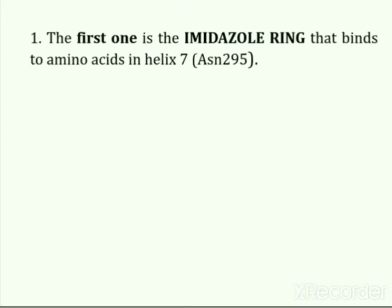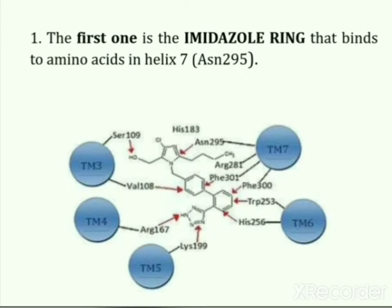The first one is the imidazole ring that binds to amino acids in helix 7. Here you can see the imidazole ring and it binds to asparagine 295.